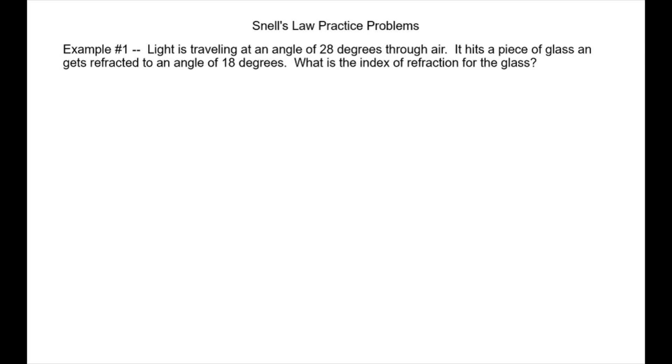This example says light is traveling at an angle of 28 degrees through air. It hits a piece of glass and gets refracted to an angle of 18 degrees. What is the index of refraction for the glass?